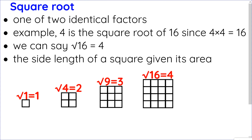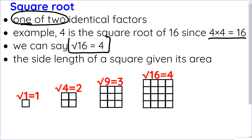So that's what a square is. Let's talk about square roots. If a square is two identical factors that multiply together, a square root is one of those two identical factors. For example, 4 is the square root of 16, since 4 times 4 is 16. We can say the square root of 16 equals 4. Pictorially, that means the side length of a square given its area. If the area is 9, the square root of 9 is 3 because the side length is 3.